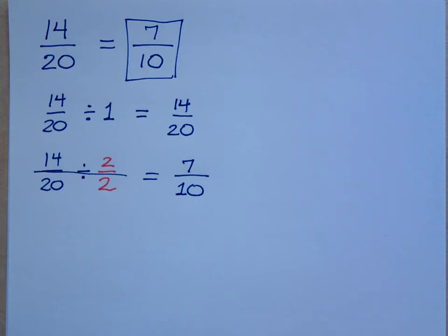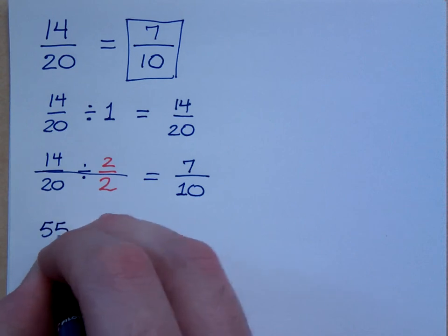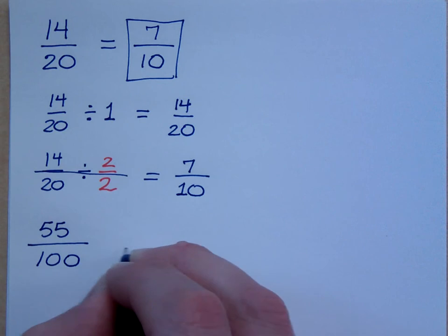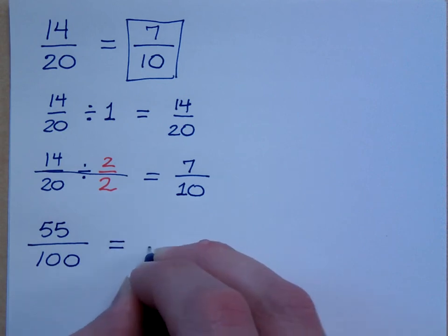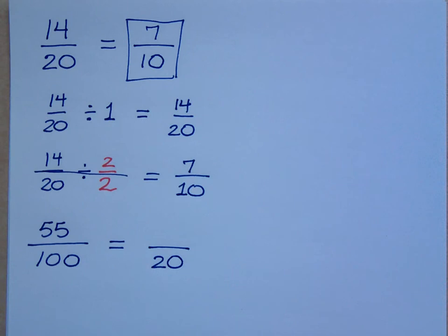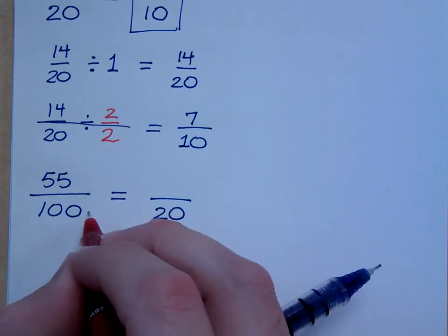So, you can multiply times 1 or you can divide by 1. If I have 55 over 100, can you make this into a fraction over 20? What would you have done to turn the 100 into a 20? You would have divided by what number?